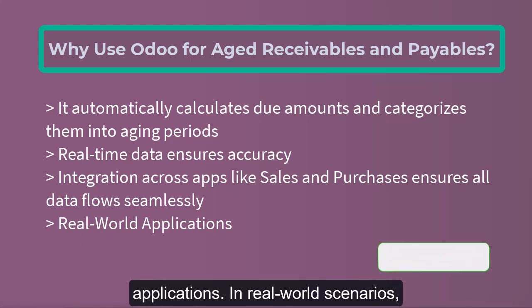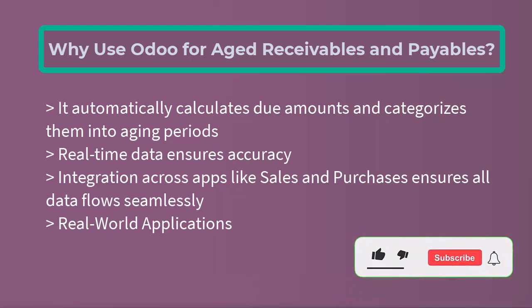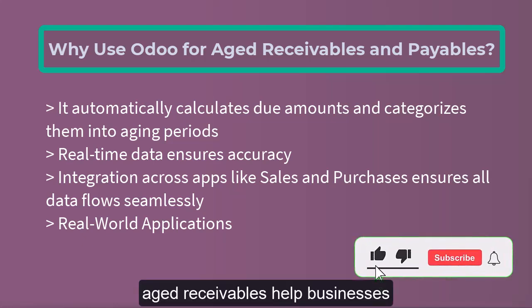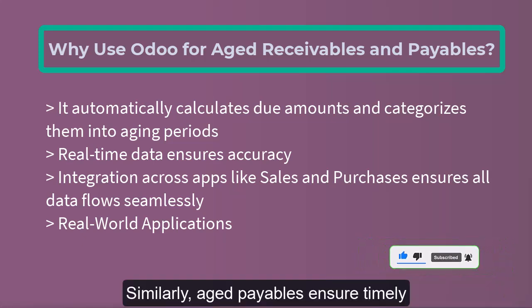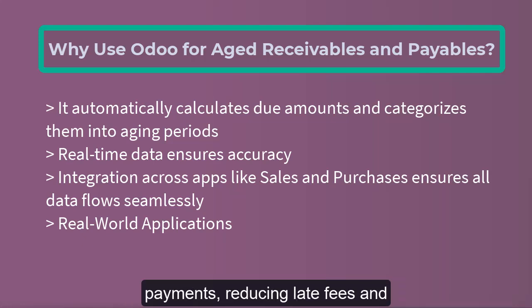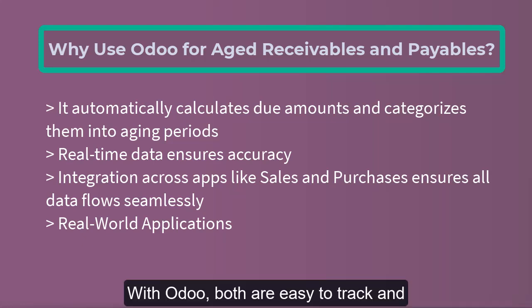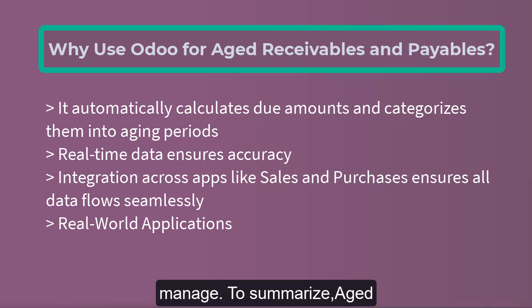In real-world scenarios, Aged Receivables help businesses proactively follow up on overdue payments, improving cash flow. Similarly, Aged Payables ensure timely payments, reducing late fees and fostering strong vendor relationships. With Odoo, both are easy to track and manage.